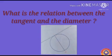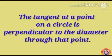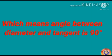Next we will go for an important concept. What is the relation between the tangent and the diameter through that point? The tangent at a point on a circle is perpendicular to the diameter through that point, which means the angle between diameter and tangent is 90 degrees.